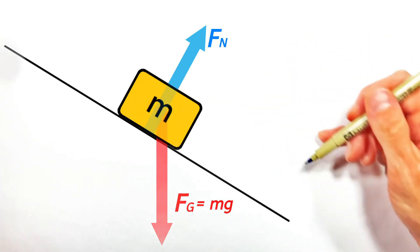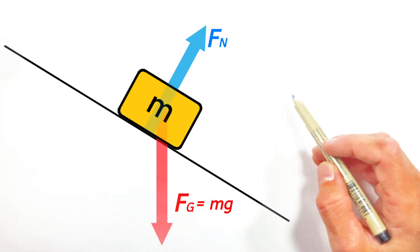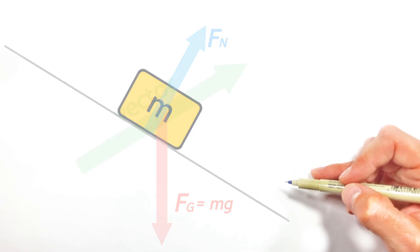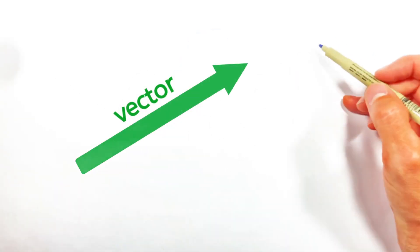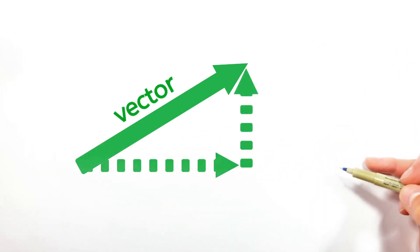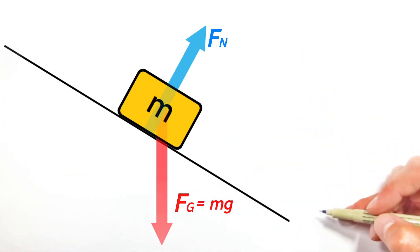So why does this block have a tendency to slide downhill? And the answer to that question lies in looking at the components of these forces. See, you may have taken a vector before and broken it up into its vertical and horizontal components. And we're going to do the exact same thing here with our little block sitting on this hill.